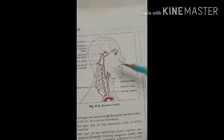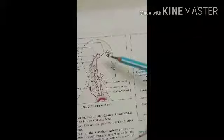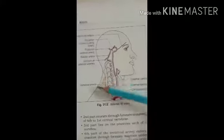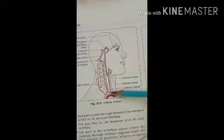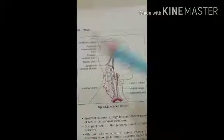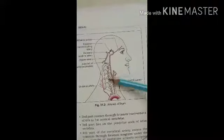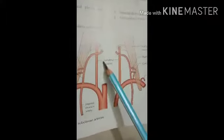Now let's see the details of the circulation of head, neck and the face. The paired arteries supplying the head, neck and face are the common carotid artery and the vertebral artery. So let's see first the vertebral artery — here in this diagram you can see the vertebral artery.